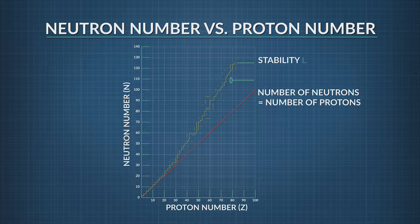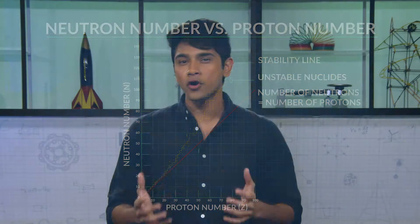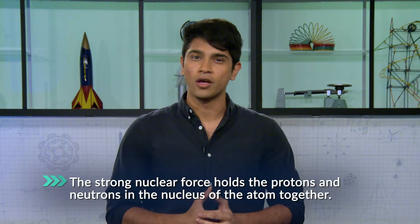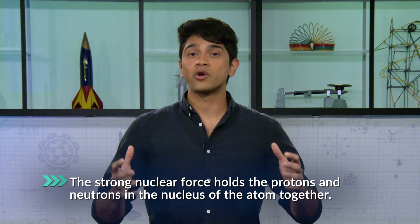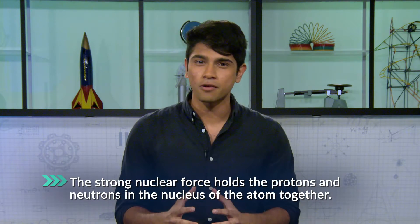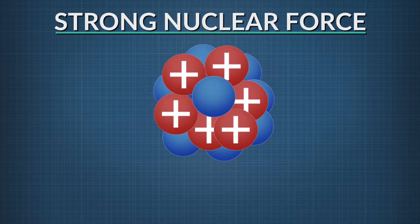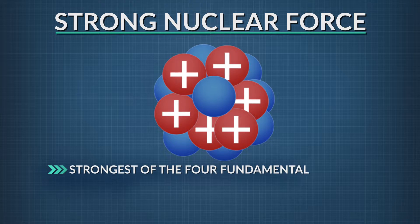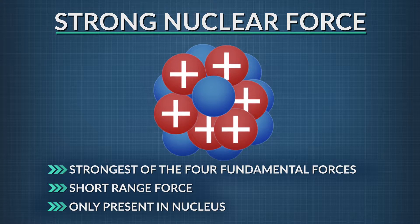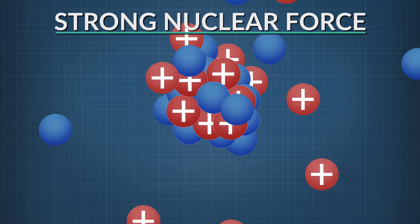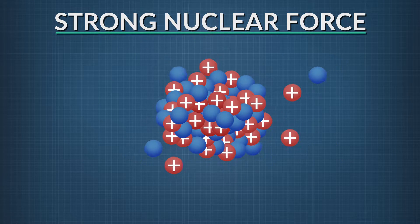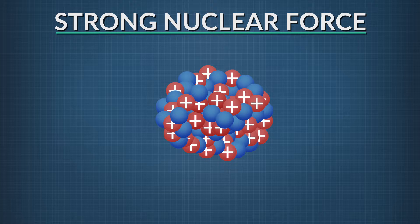A challenge for scientists has been to figure out what holds the nucleus together. How do positively charged protons hang out together in the nucleus without repelling each other? Physicists discovered that these particles are held together by the strong nuclear force, one of the four fundamental forces. It's what holds protons and neutrons in the nucleus together. The strong nuclear force is the strongest of the four fundamental forces in the universe, but it has a very short range — about the diameter of a medium-sized nucleus — and it's only present in the nucleus.